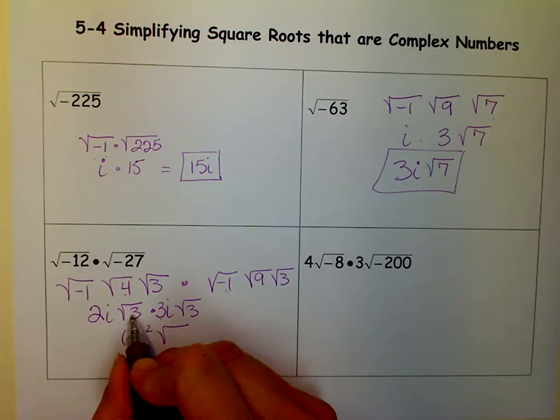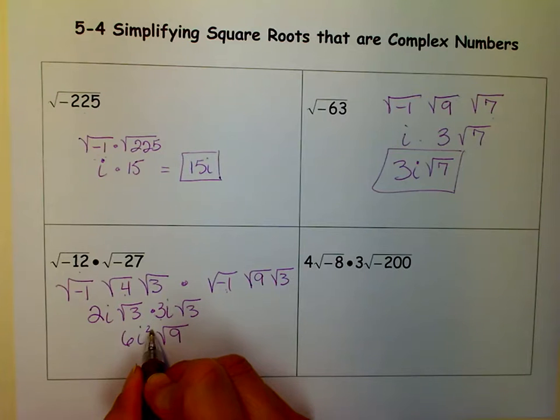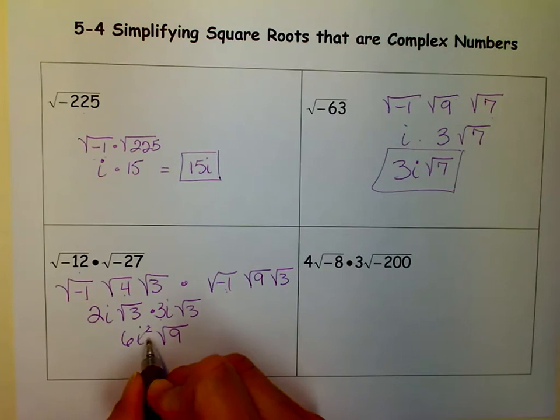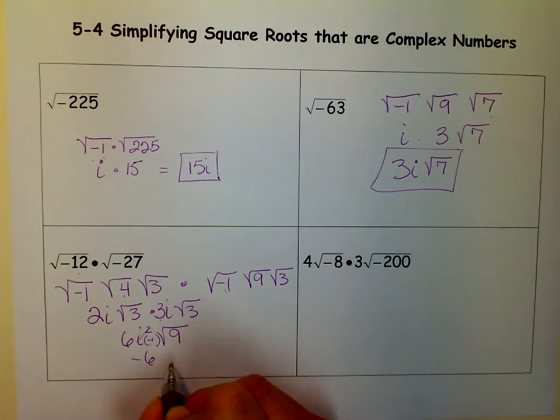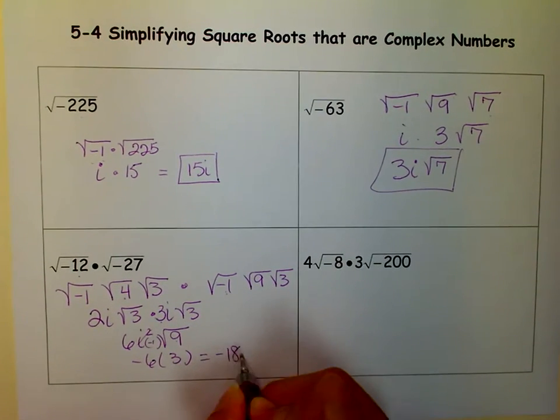And then I have the square root of 3 times the square root of 3, which is the square root of 9. So I have more simplifying to do. i squared is negative 1. So now I have 6 times negative 1, which is negative 6. But then I have the square root of 9, which is 3. So I end up with a negative 18.